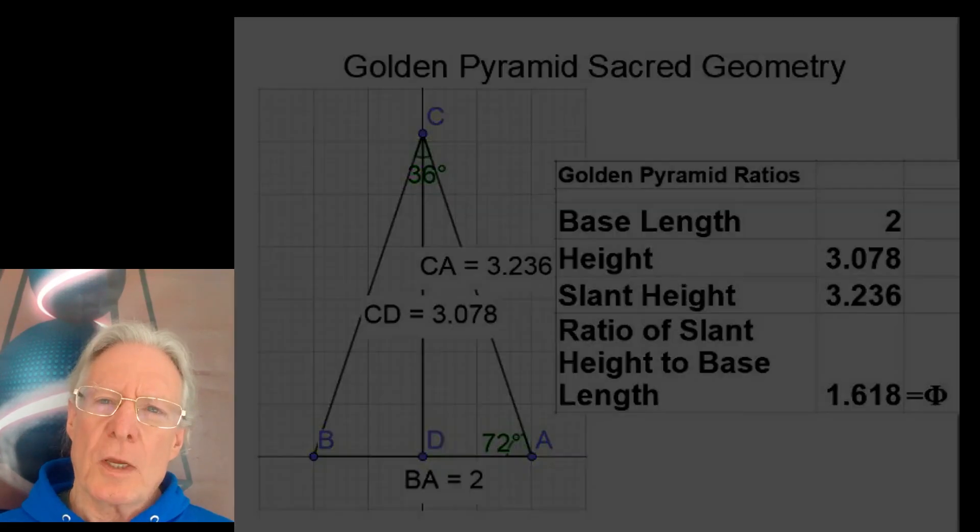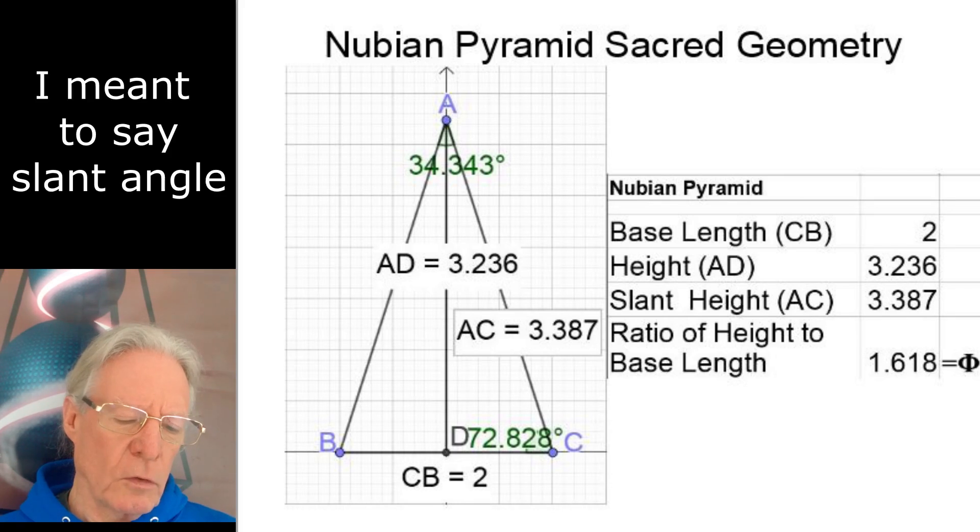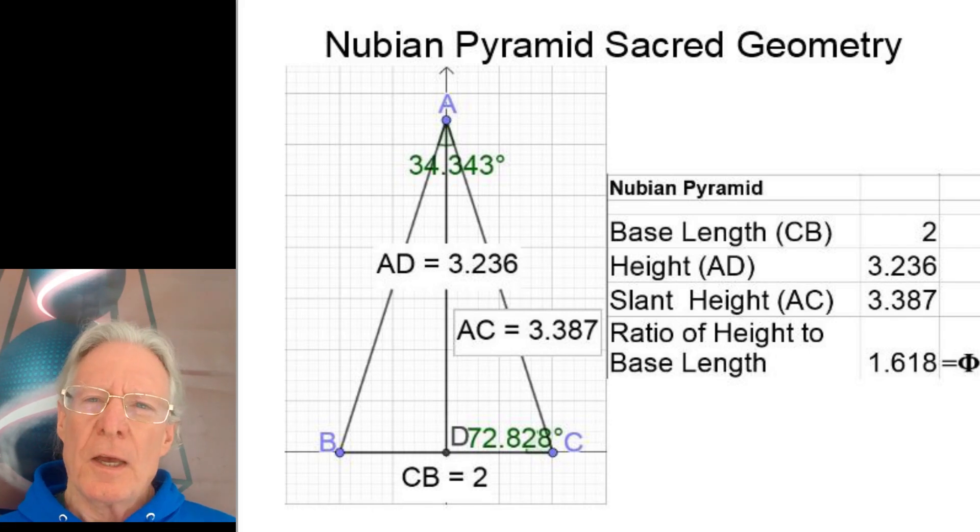And now we'll go over the same information on the Nubian Pyramid. You'll see there that the slant height is slightly higher at 72.828 degrees. You multiply that by two and subtract it from 180, and you get the apex angle of 34.345 degrees. And in this case, the base length, once again, is 2 from point C to B. The height of the pyramid from point A to D is 3.326. And the slant height from point A to point C is 3.387.